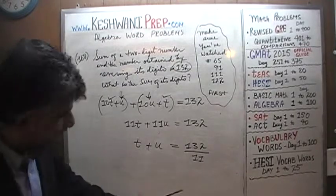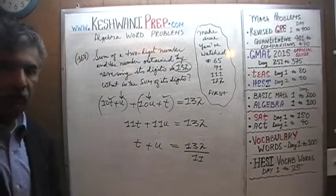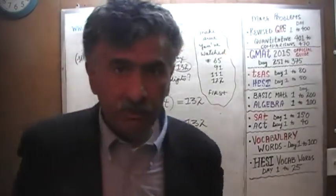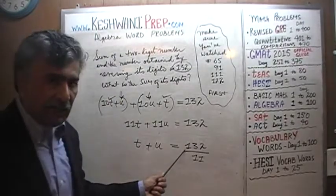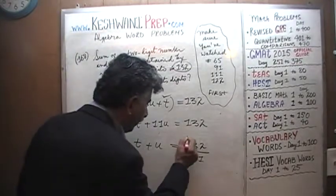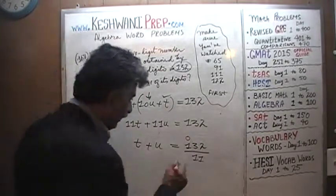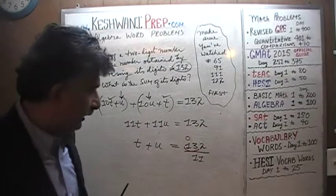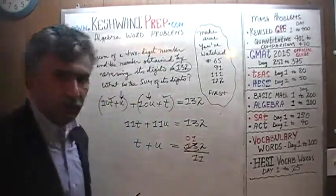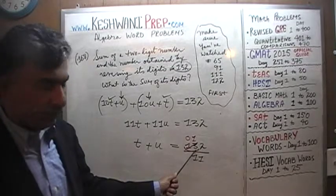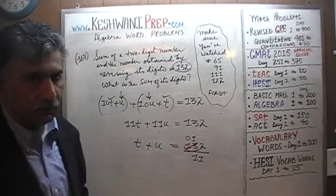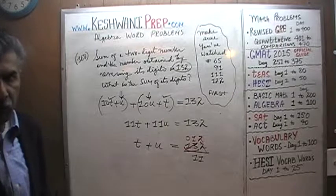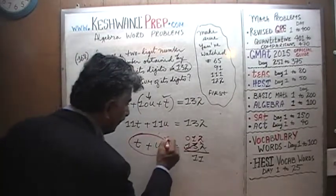Let's divide 132 by 11. How many 11s does 1 have? One is too small to have any 11s, so that 1 joins the 3 to become 13. How many 11s does 13 have? 13 has one 11. After taking away 11 from 13, we have a remainder of 2. That 2 joins the next 2 to become 22, and 22 has two 11s. So the answer to the question — what is the sum of the digits — is 12.